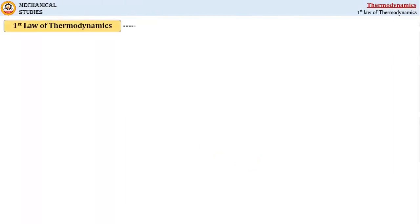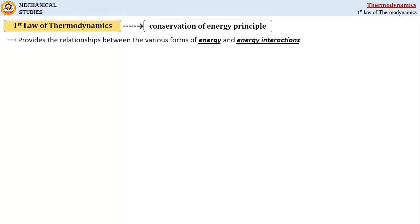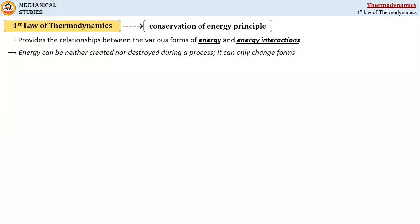The first law of thermodynamics is basically the conservation of energy principle that provides the relationship between the various forms of energy and energy interactions like heat and work. The first law tells us that heat and mechanical work are mutually interchangeable or convertible. The statement of conservation of energy states that energy can be neither created nor destroyed during a process — it can only change forms.